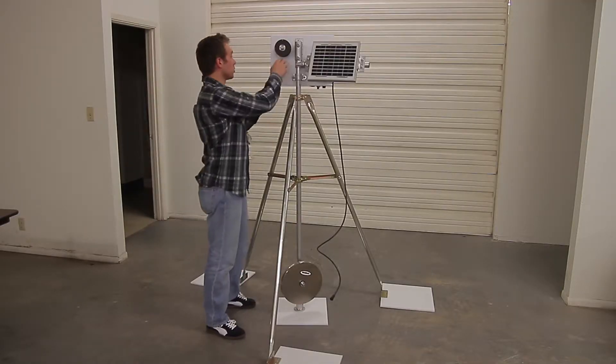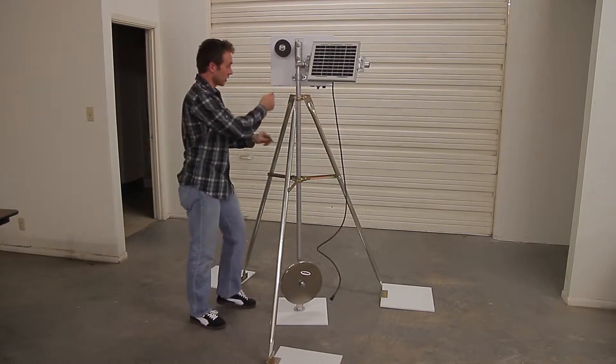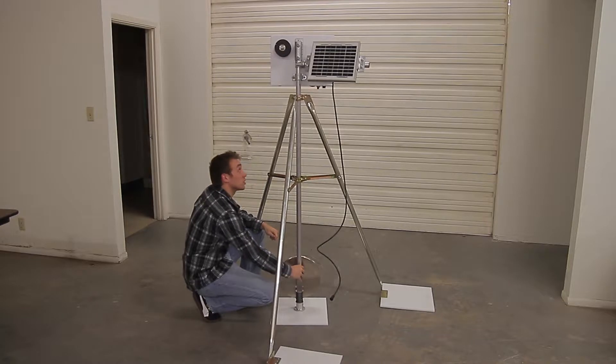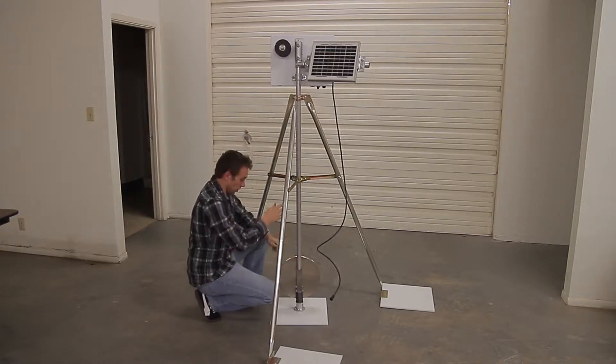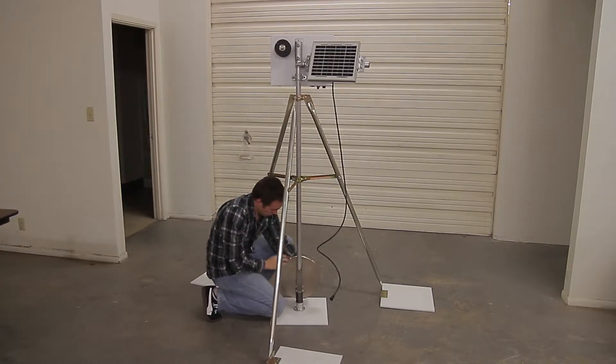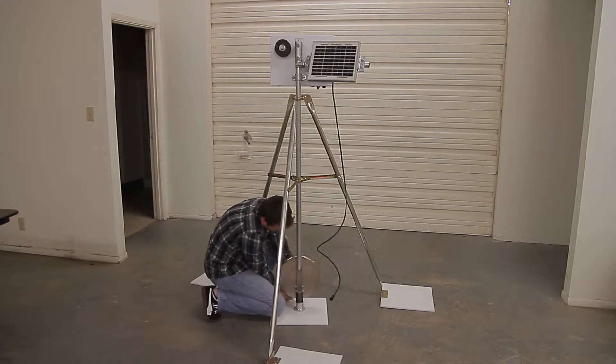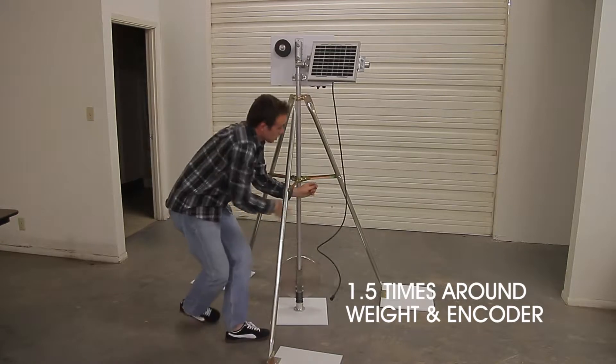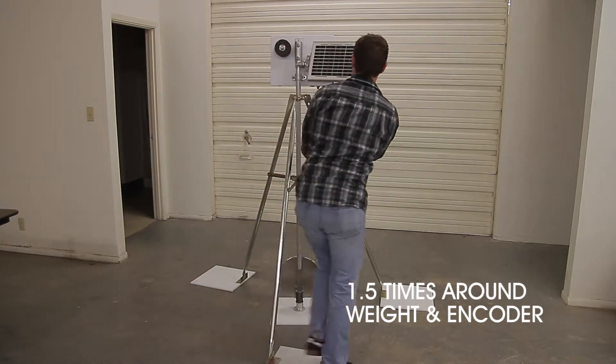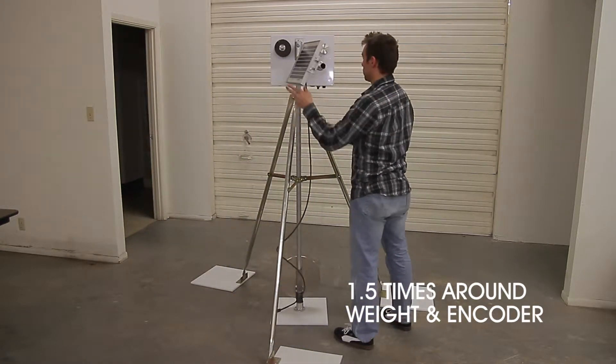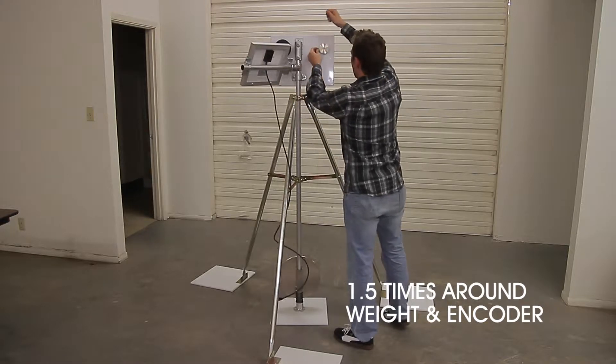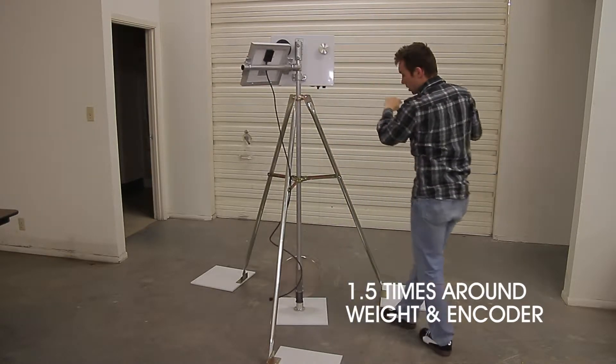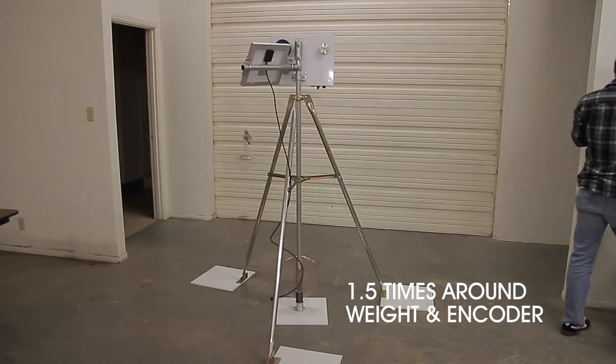Now we are ready to run the wire. Flip the weight around so that it's directly underneath the SlideMinder. And then we'll go around the weight one and a half times, and then one and a half times around the encoder, and then out to your stake.